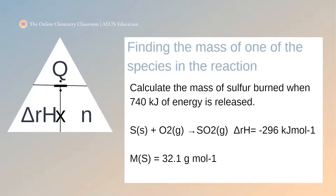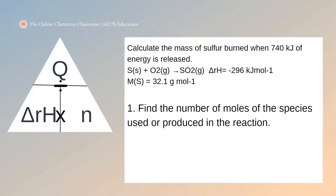So the third type of question is finding the mass of one of the species in the reaction. For this example, we are calculating the mass of sulfur burned when 740 kilojoules of energy is released. The balanced equation shows that for one mole of sulfur, 296 kilojoules per mole of energy is released. So we need to work out how much sulfur we need to release 740 kilojoules.